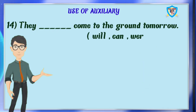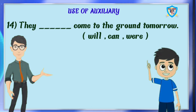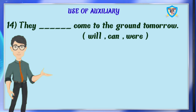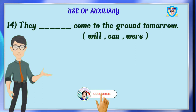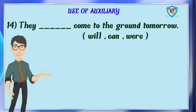Question 14: they dash come to the ground tomorrow. Options are will, can, were. Which is the right answer? The right answer is can. No, it is wrong. They dash come to the ground tomorrow — it is present simple but future time, so we have to use will. They will come to the ground tomorrow.